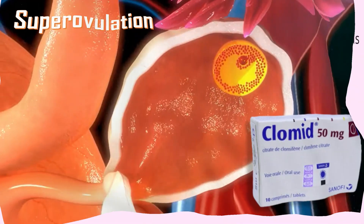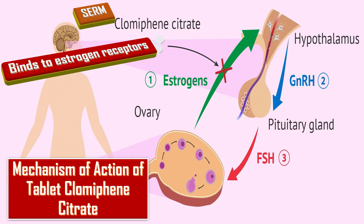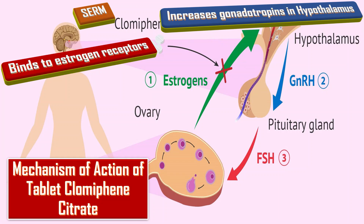Now we will talk about the mechanism of action of tablet clomiphene citrate. Clomiphene is a selective estrogen receptor modulator. It selectively binds to estrogen receptors in the hypothalamus, ovary, endometrium, and cervix, and produces estrogenic and anti-estrogenic effects. It also acts as a partial estrogen agonist in the hypothalamus, resulting in an estrogenic negative feedback inhibition, thus increasing the gonadotropin level.